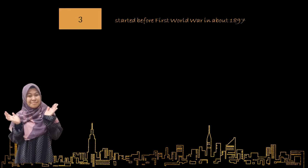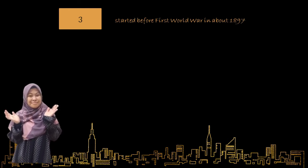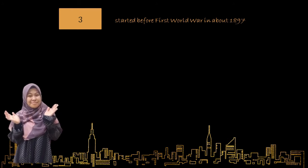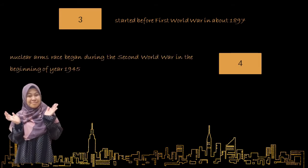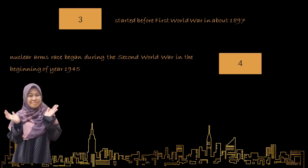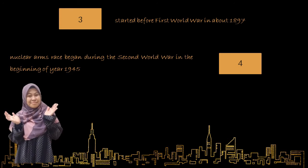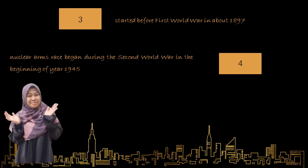Arms race had already started before the First World War, in about 1897 to 1914. This war consists of a naval arms race between the United Kingdom and Germany. Then the nuclear arms race began during the Second World War in the beginning of year 1945, between the Soviet Union, the United States, and some other countries, as they competed to create advanced nuclear bomb technology. So, there is a little view of the history of arms race.